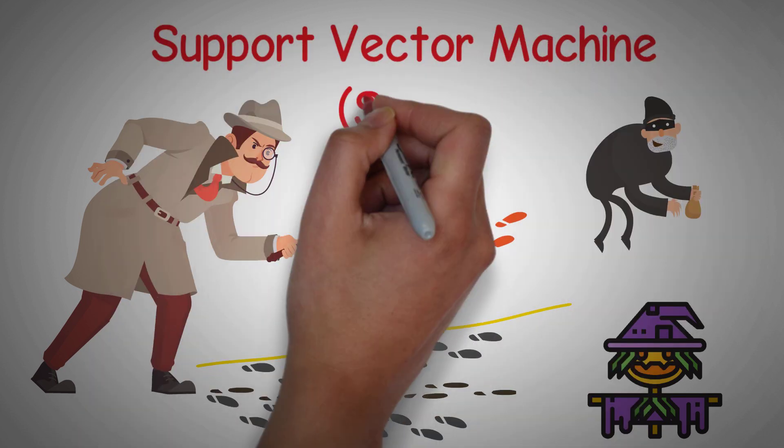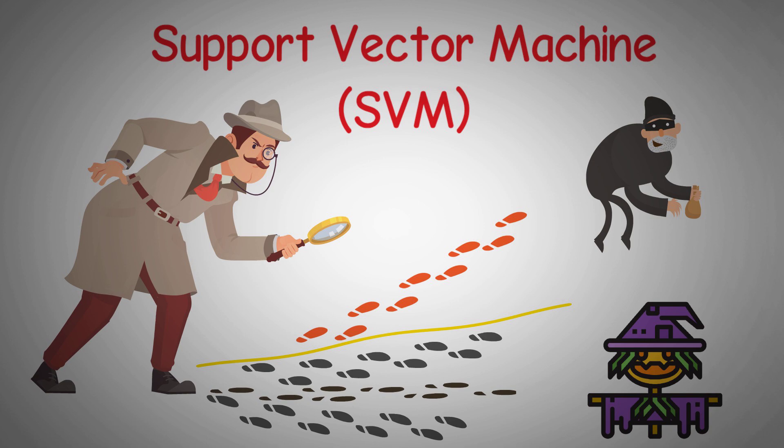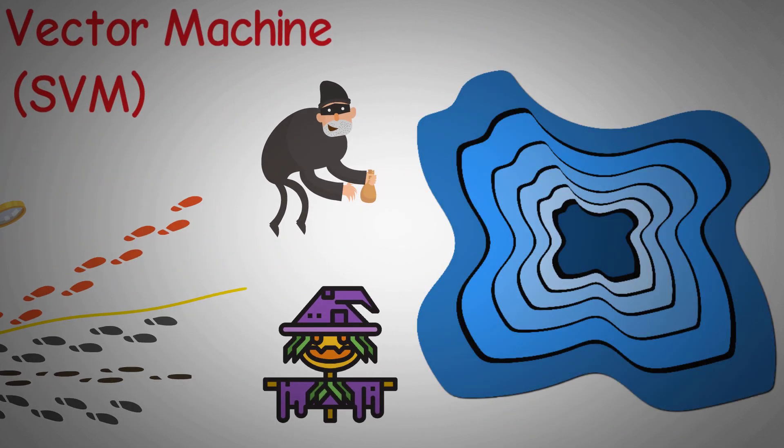This is essentially what a support vector machine does, but instead of clues, it works with data points, and instead of a map, it deals with a multi-dimensional space.